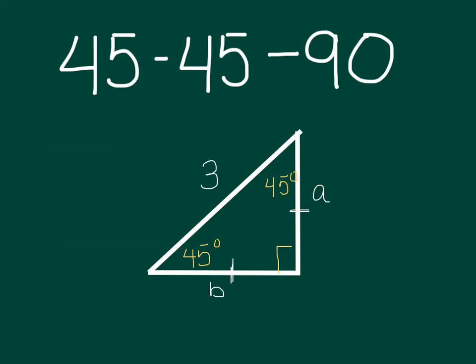Now I'm going to do one more quick example. This time though, instead of knowing the leg, we know the hypotenuse which is 3. But we can still do it because we still know that the two legs are the same. So here I've labeled them as a and b. Well if they're actually the same I can give them the same letter. So we'll do a and a.